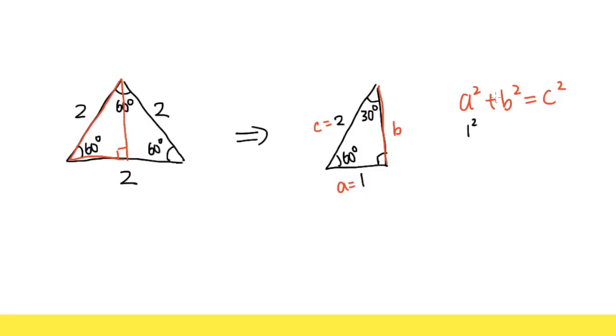A is 1, so we have 1 squared, plus B, we don't know, right? So that's still B squared, and this is equal to C is 2, so we have 2 squared. Let's work this out. 1 squared is 1, plus B squared, we don't know, so just leave it as how it is. And this is equal to 2 squared, that means 2 times 2, we have 4. And then we can just subtract 1 on both sides, then that will cancel. And then we see that we will end up with B squared is equal to 4 minus 1, which is 3.